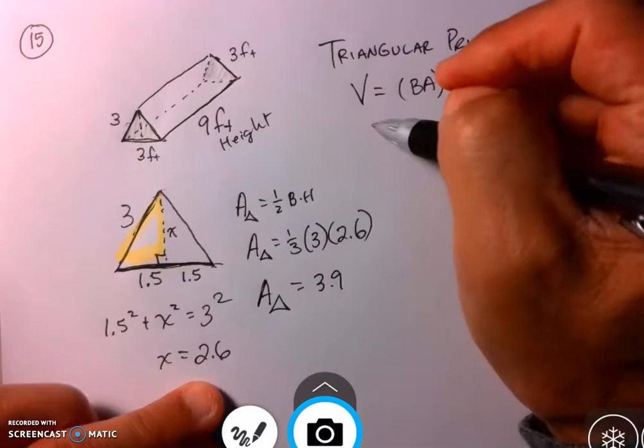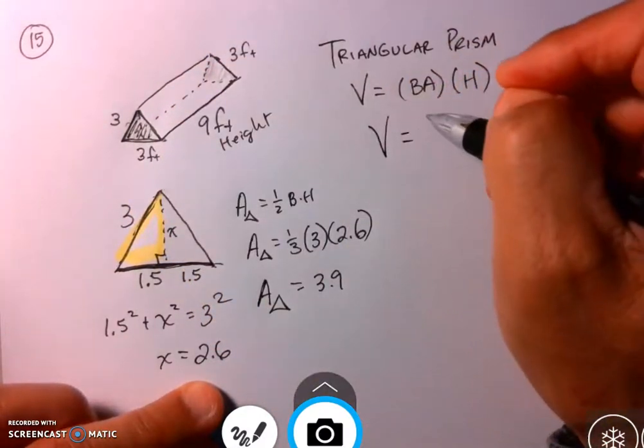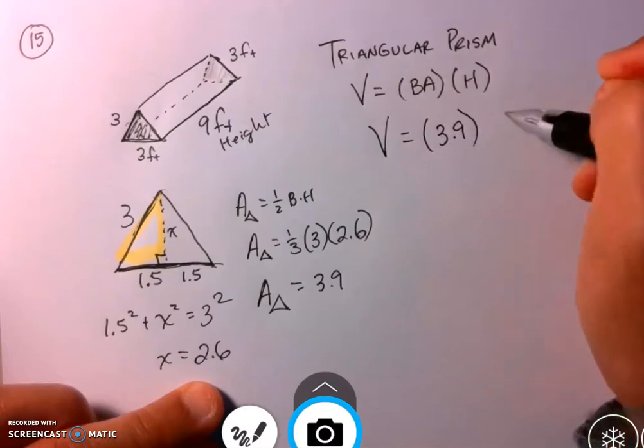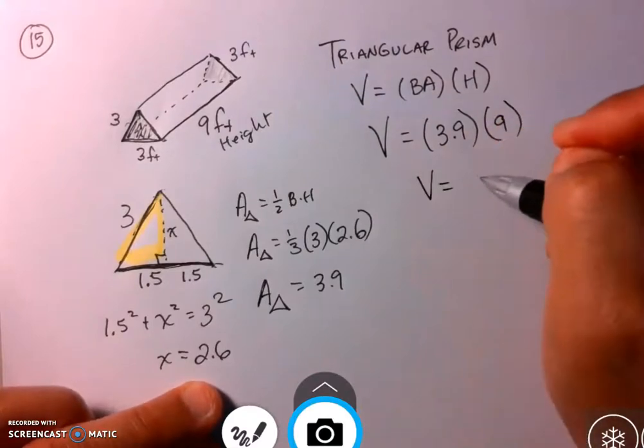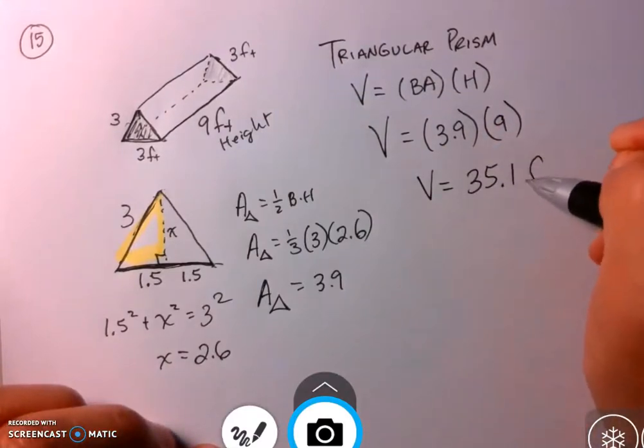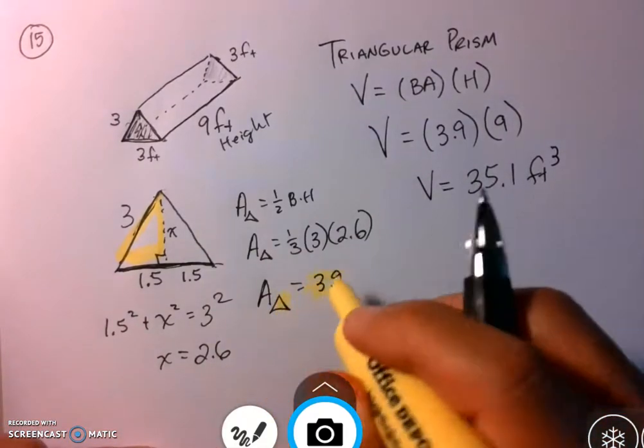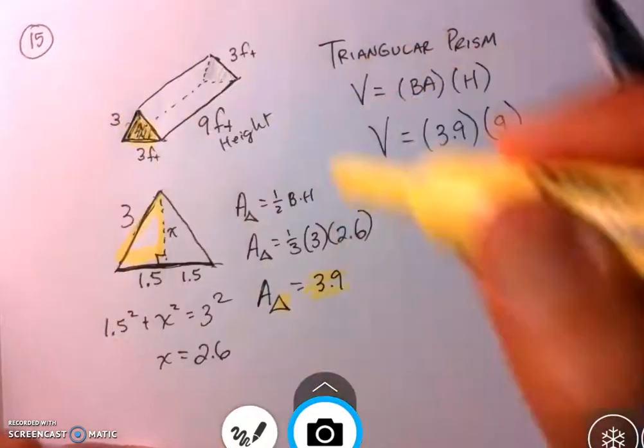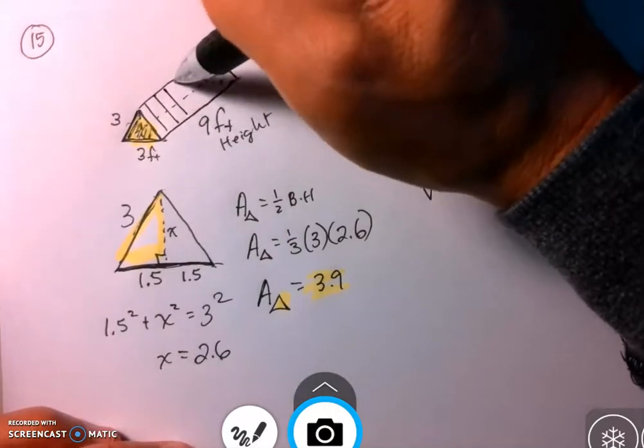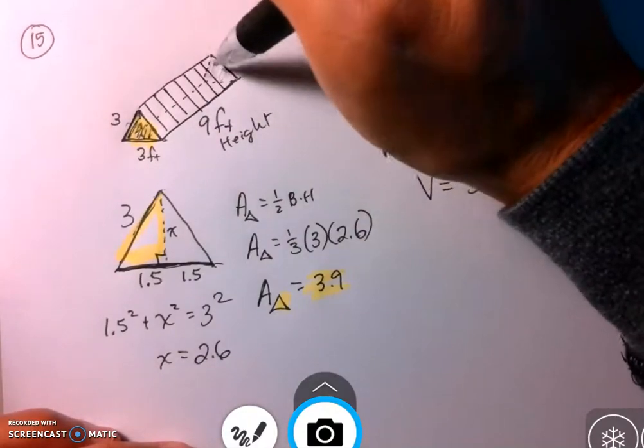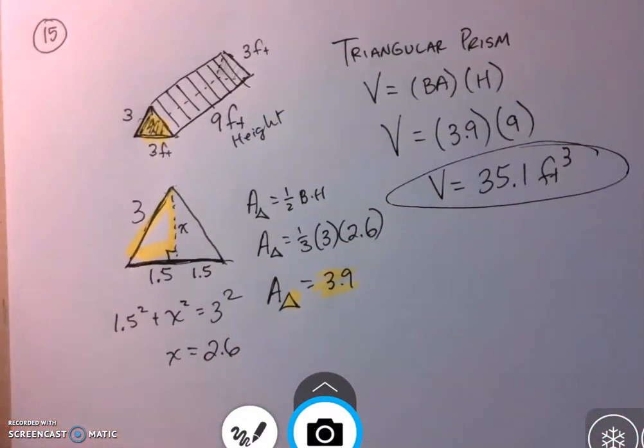Okay. So when we go to the volume now, if this one little area here is 3.9, you're going to put that as the base area, and you're going to multiply it by the height of 9. And when you do that, 3.9 times 9 is about 35.1 feet cubed. So again, each one of these triangles here is about 3.9, and it's like cutting a cake here. There's nine of these 3.9s getting cut there, and the grand total is 35.1 for the volume.